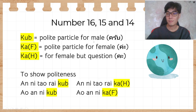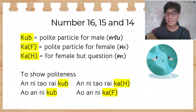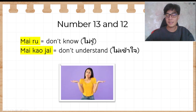ครับ is the polite particle for males and ค่ะ/คะ is for females. ค่ะ with a falling tone is used in statements, and คะ with a high tone is used in questions to show politeness. For example, อันนี้เท่าไหร่ครับ is more polite than อันนี้เท่าไหร่, and อันนี้เท่าไหร่คะ is the female question form.